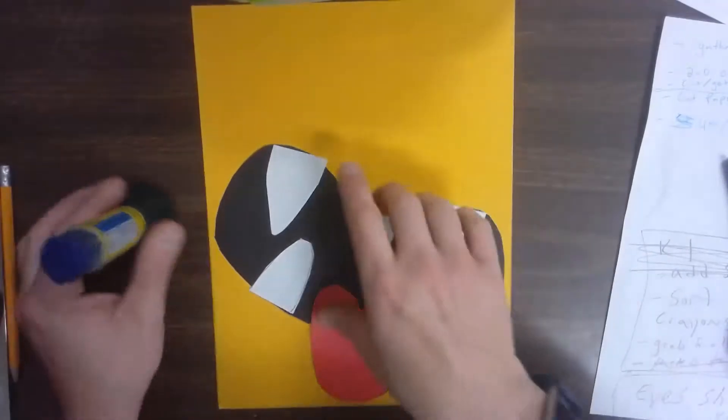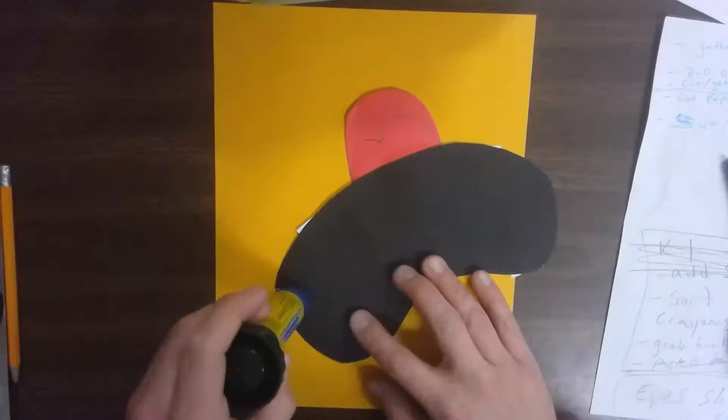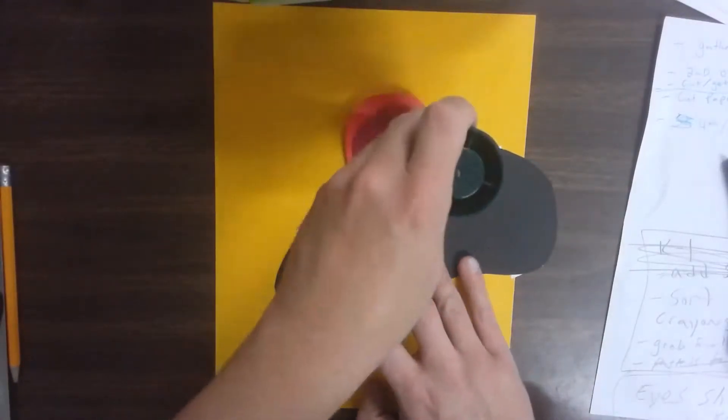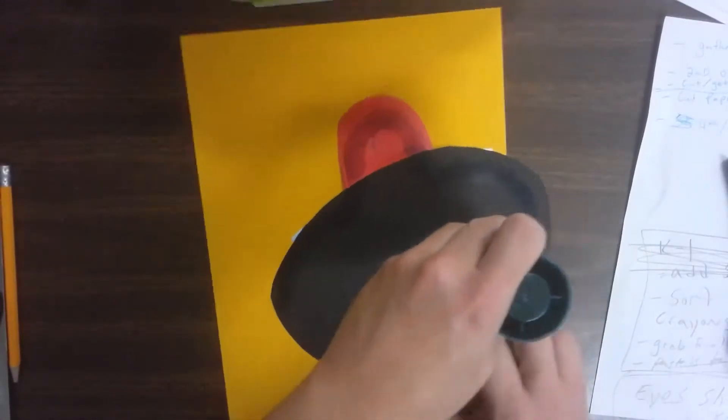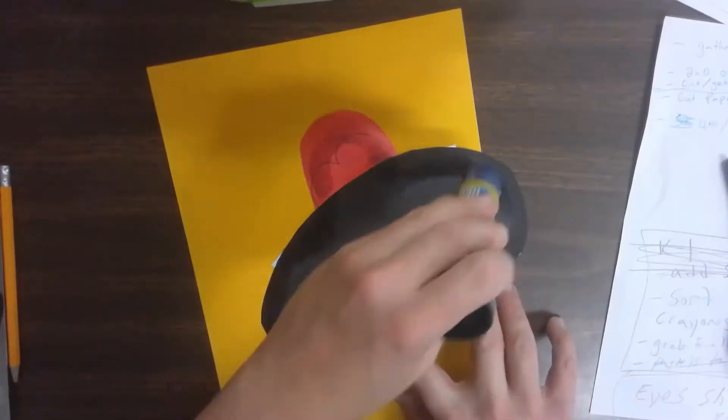So again, this is a bigger piece, so I'm not going to cover the whole thing with glue, but I'm going to go around all the sides. And then I like to just kind of put like an X through the middle.